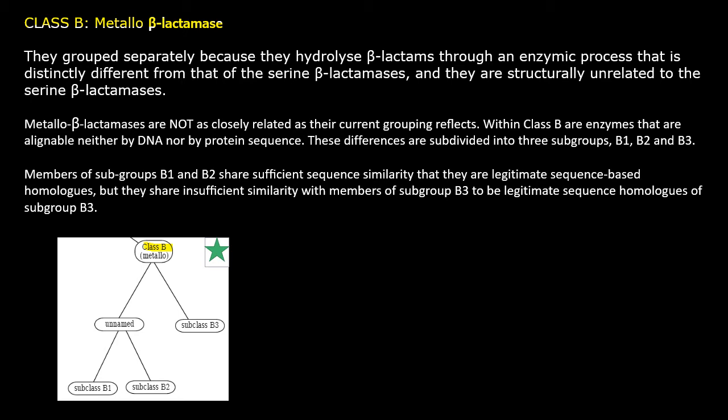These differences subdivide class B into three subgroups: B1, B2, and B3. The members of subgroups B1 and B2 share significant similarity in sequence — they are legitimate sequence-based homologs — but they share insufficient similarity with the members of subgroup B3 to be legitimate sequence homologs of subgroup B3. So subclasses B1 and B2 are grouped together, while B3 is grouped separately.